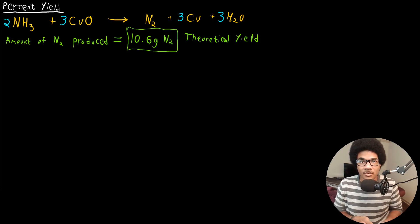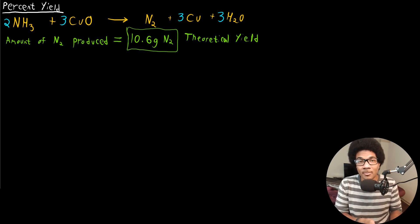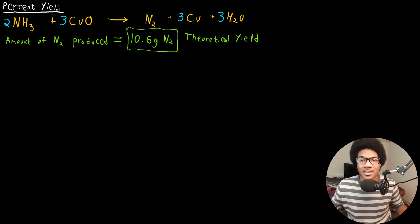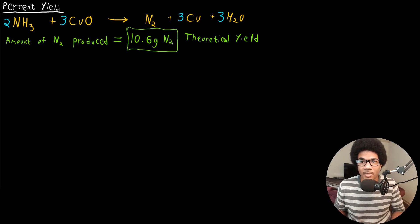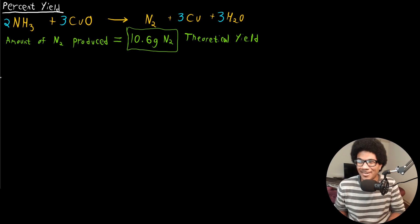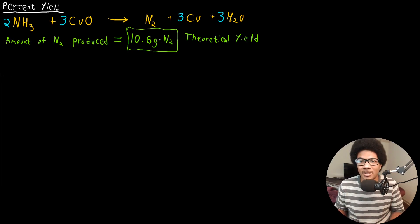The theoretical yield is the amount that would be produced if all of the limiting reactant is consumed and everything goes perfectly. This is the maximum amount of product that you can produce from that starting material. In reality, that doesn't always play out.